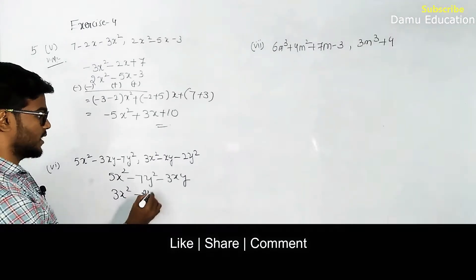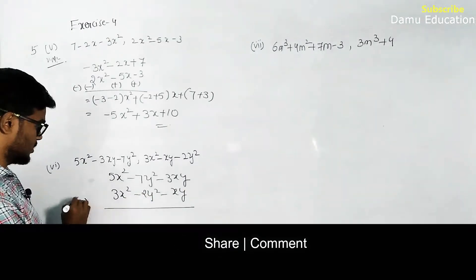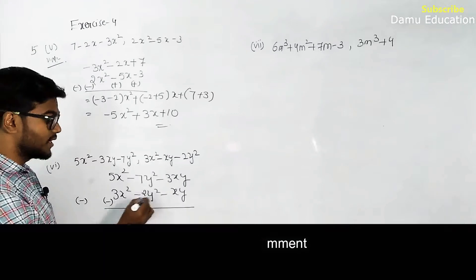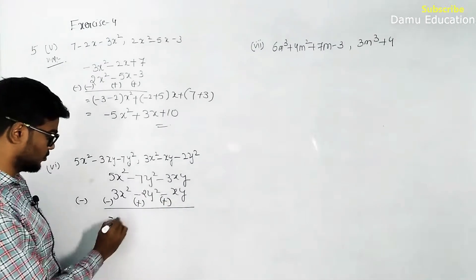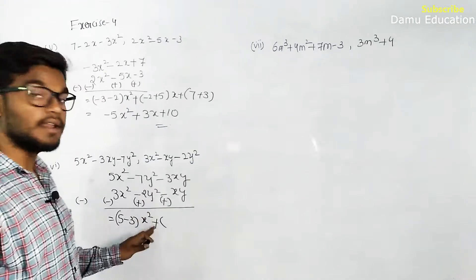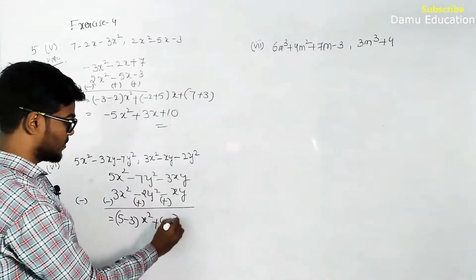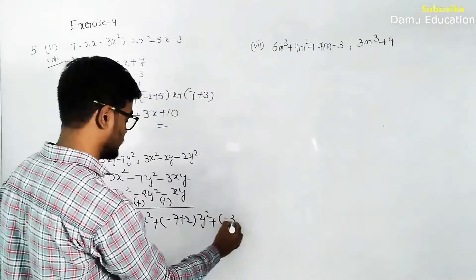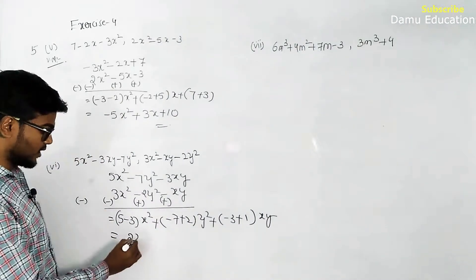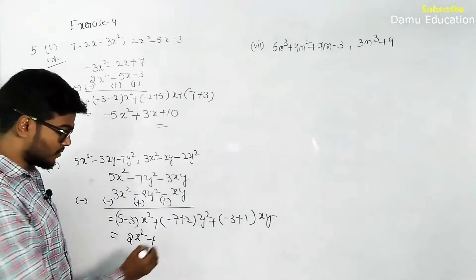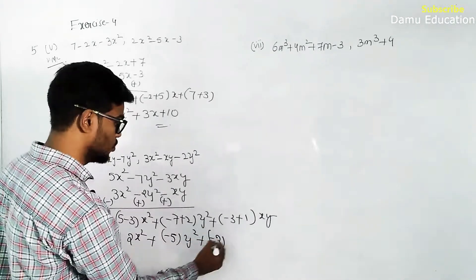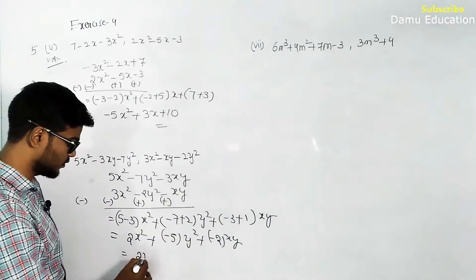Sixth question: 5x squared minus 7y squared minus 3xy, subtract 3x squared minus 2y squared minus xy. Change all symbols of the second expression: minus 3x squared becomes plus 3x squared, minus 2y squared becomes plus 2y squared, minus xy becomes plus xy. So 5 minus 3 is 2x squared, minus 7 plus 2 is minus 5y squared, minus 3 plus 1 is minus 2xy.